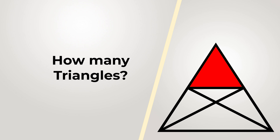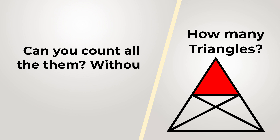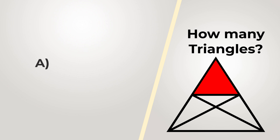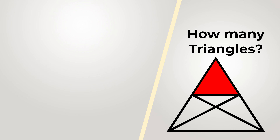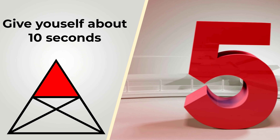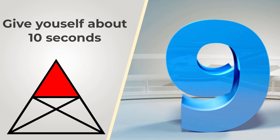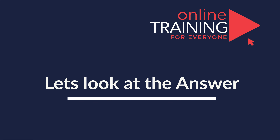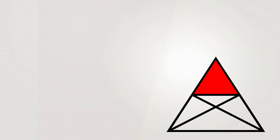This is one of my favorite questions with a very high chance of appearing on the assessment test. How many triangles do you see? You are presented with a shape on the left that has large triangles and lines inside them. You have four choices: A — 9, B — 12, C — 17, D — 24. One triangle is highlighted in red. Give yourself 10 to 15 seconds — you can pause the video. I counted 12 triangles in this picture.